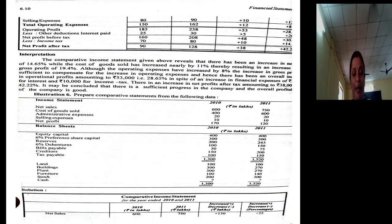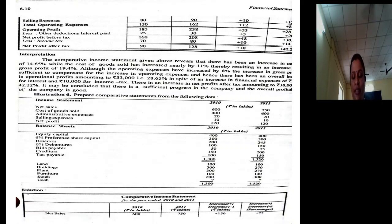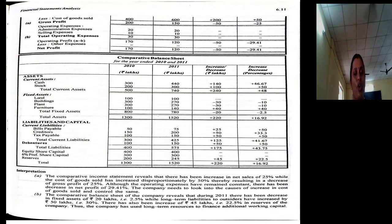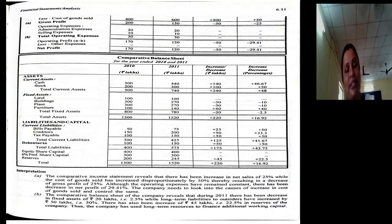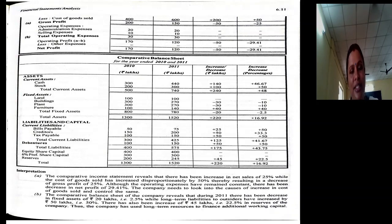They asked us to prepare a comparative statement. First, we need to prepare the comparative income statement. Record the sales of two years: 600 and 750 rupees in lakhs. There is a 150 rupee increase — 150 divided by 600 into 100, which is a 25% increase in sales. As far as cost of goods sold: it was 400 lakhs in the first year and 600 lakhs in the second year. Increase is 200 lakhs; 200 divided by 400 into 100 is 50% increase. Gross profit was 200 in the first year and 150 in the second year. There is no change in administrative expenses and no change in selling expenses, so there is no change in total operating expenses.